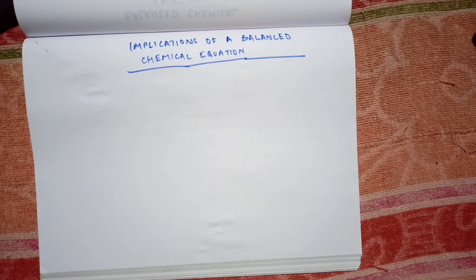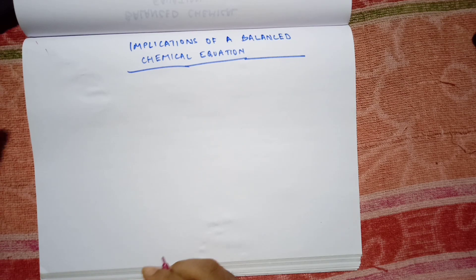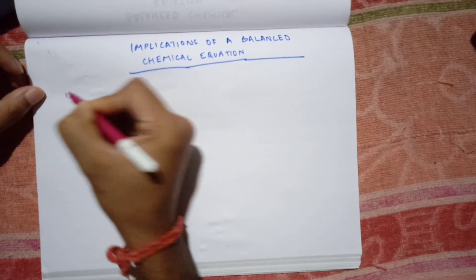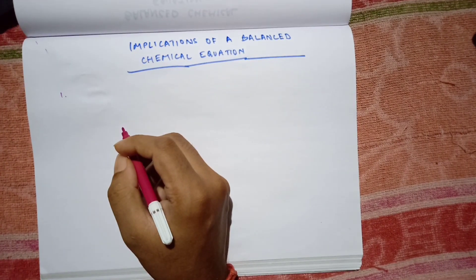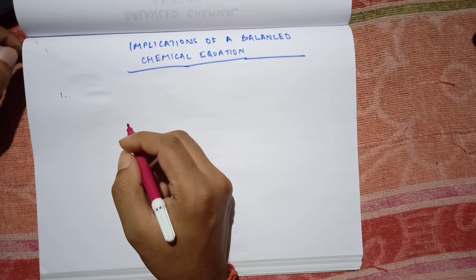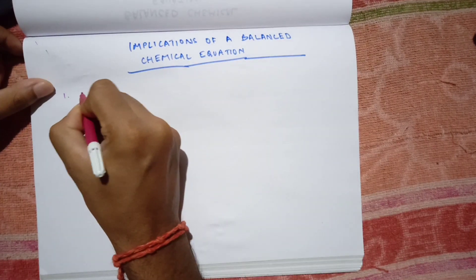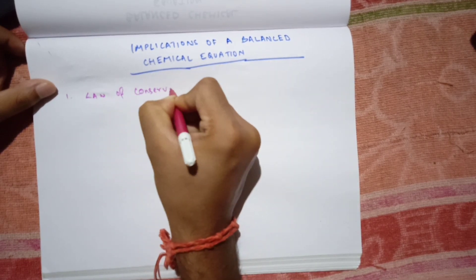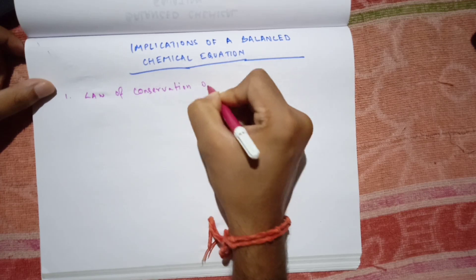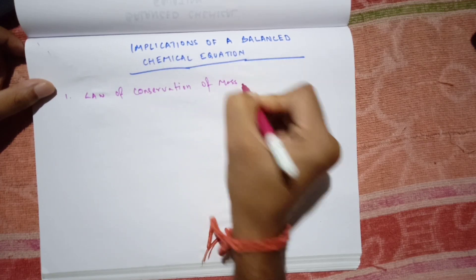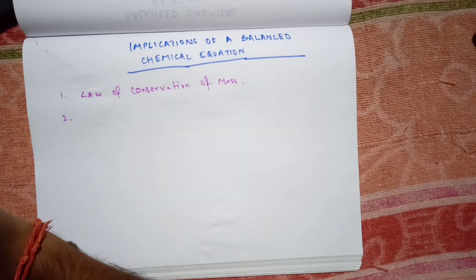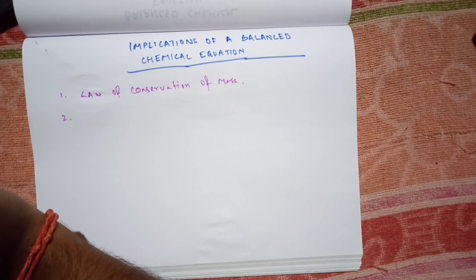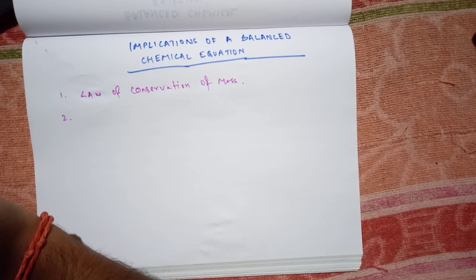Implications of a balanced chemical equation means there are some conditions that we have to satisfy to have a balanced chemical equation. So I have got you three points. The first point: the chemical equation which satisfies the law of chemical combination, which is law of conservation of mass.